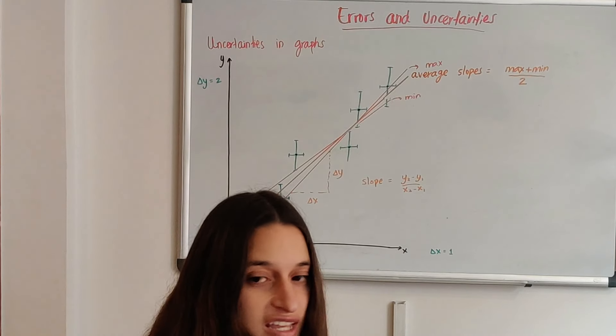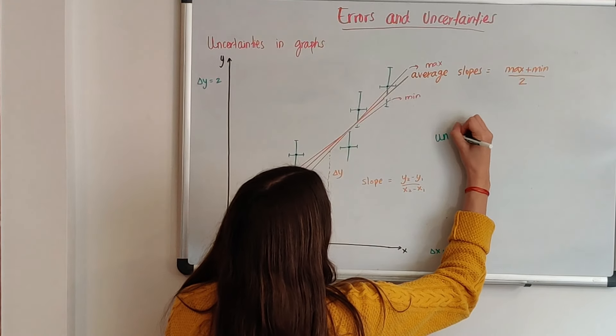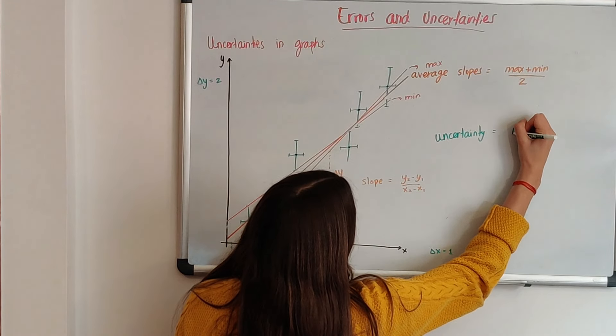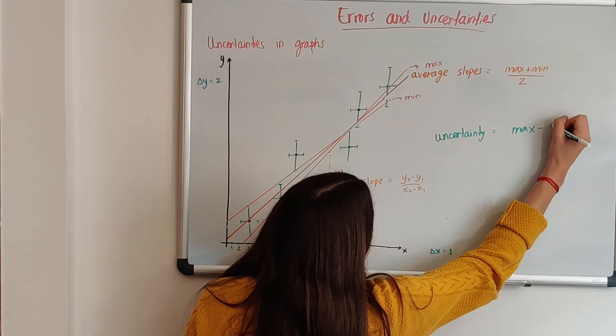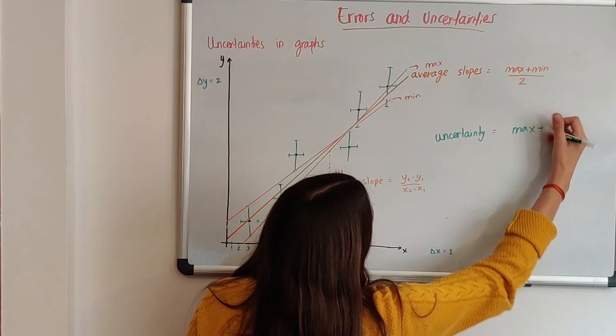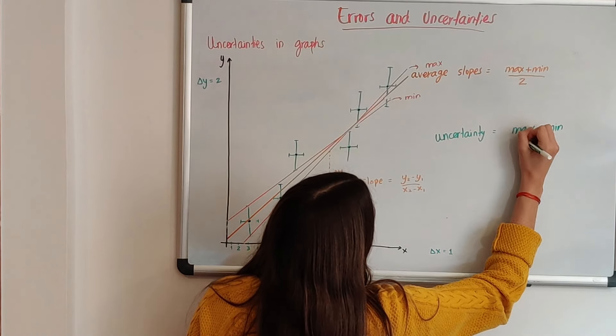So the uncertainty of that slope is actually the maximum slope minus the minimum over 2.